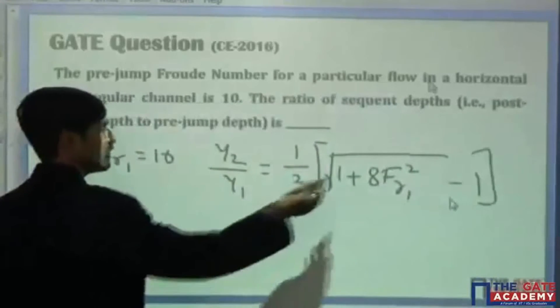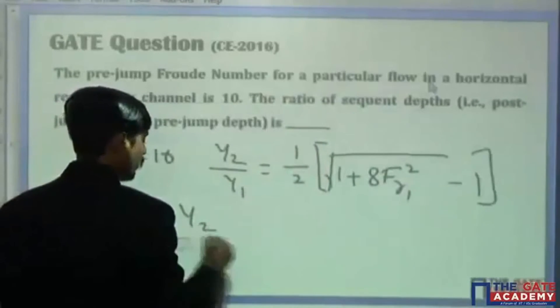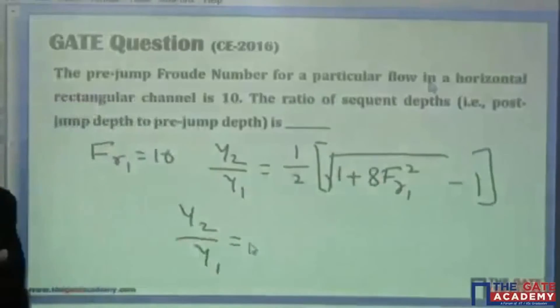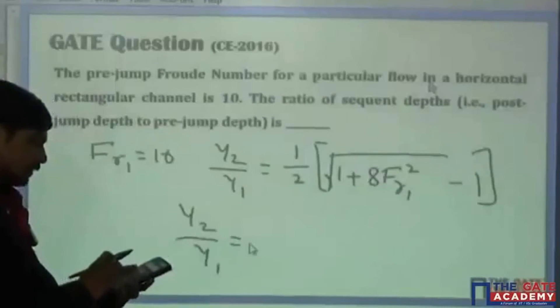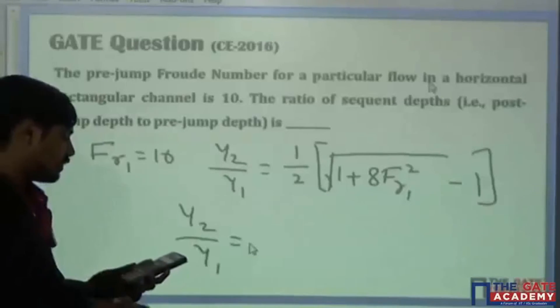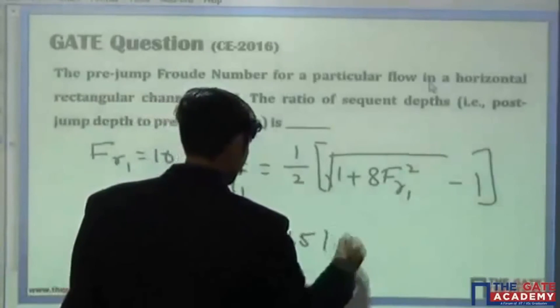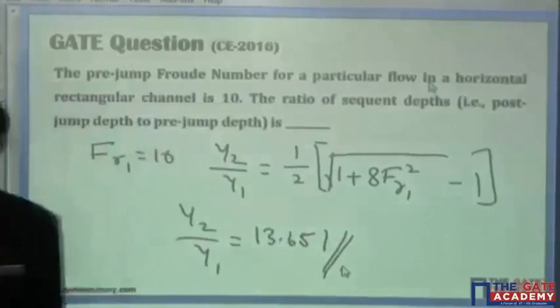Solve this: you will get the answer y2 by y1. Fr1 is 10, substitute 10 square into 8 plus 1, square root of the answer minus 1 divided by 2. The answer is 13.651. 13.651 is the correct answer.